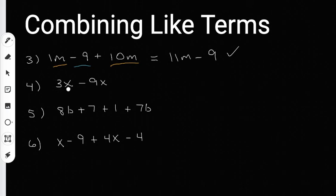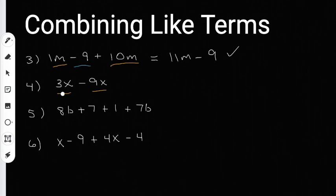Number four. When I look at number four, I see that both of these terms end with an X. Even though they have different numbers out in front, they still end with the same variable, X. So these are going to be like terms. I'm going to underline them both in yellow and combine them. I have three minus nine. Three minus nine is going to give me a negative six. So I'm going to get negative six X. I have to remember to bring my X over, or it's going to be wrong. So those two terms combine to give me negative six X for my answer.